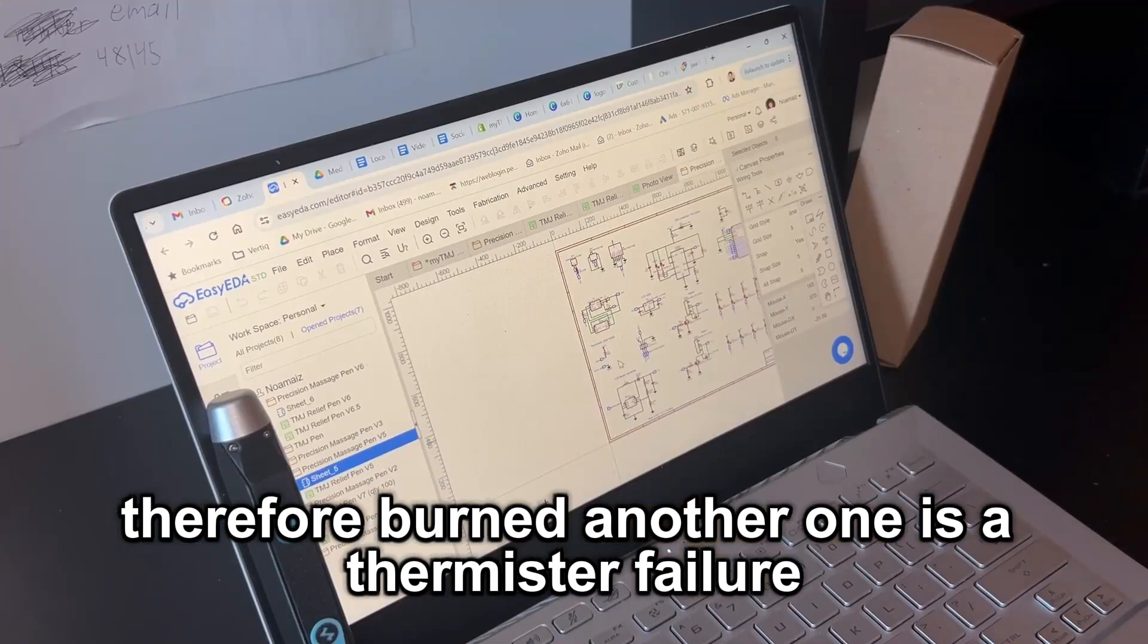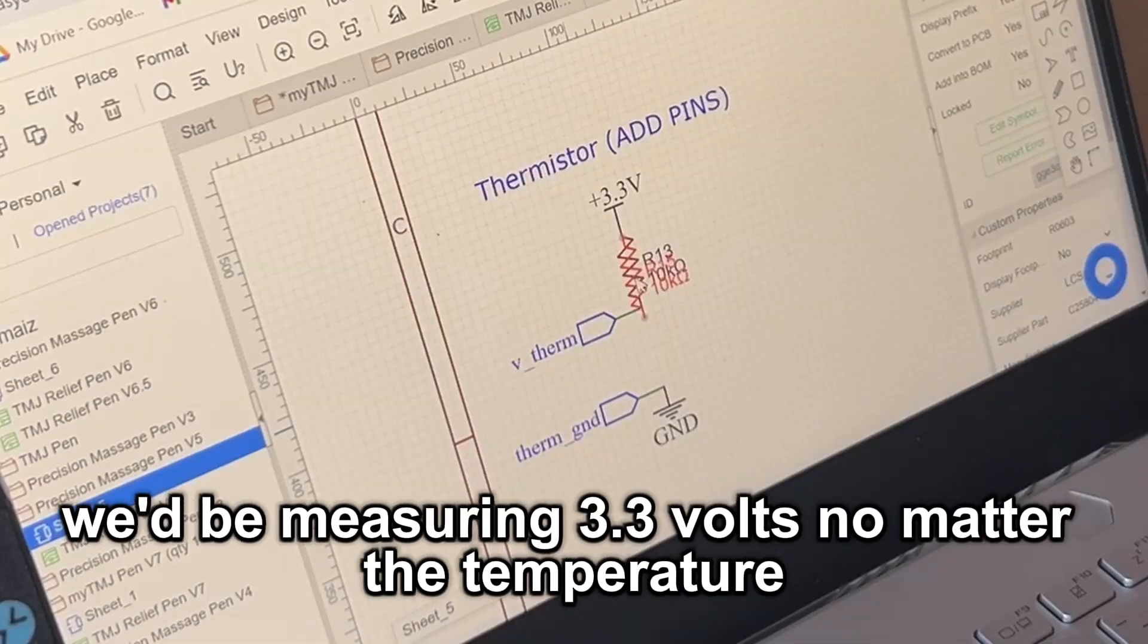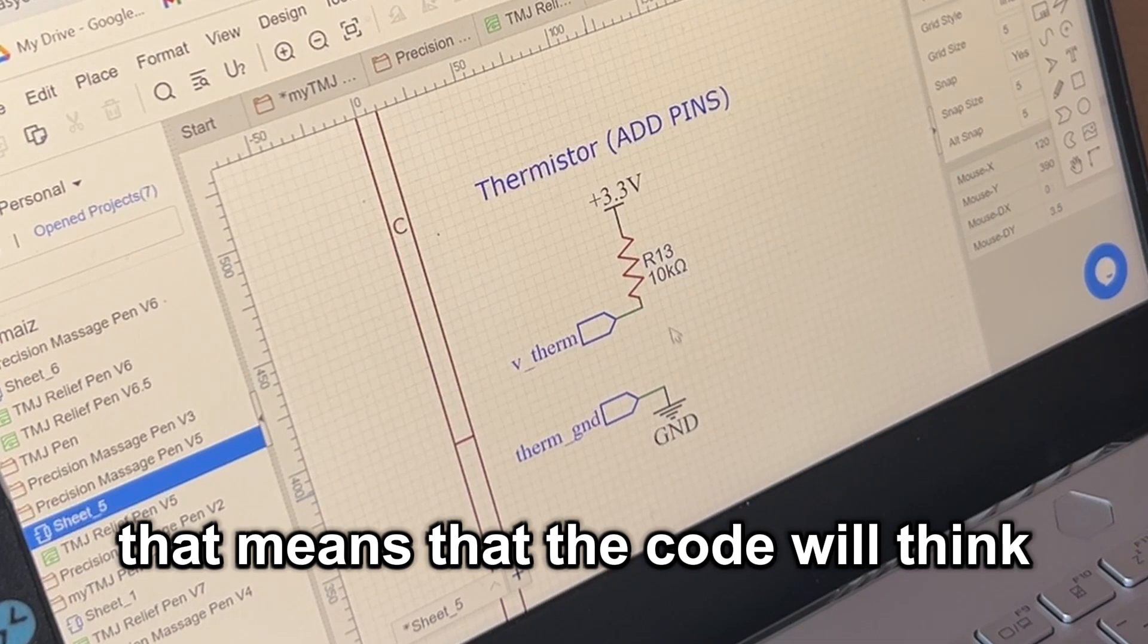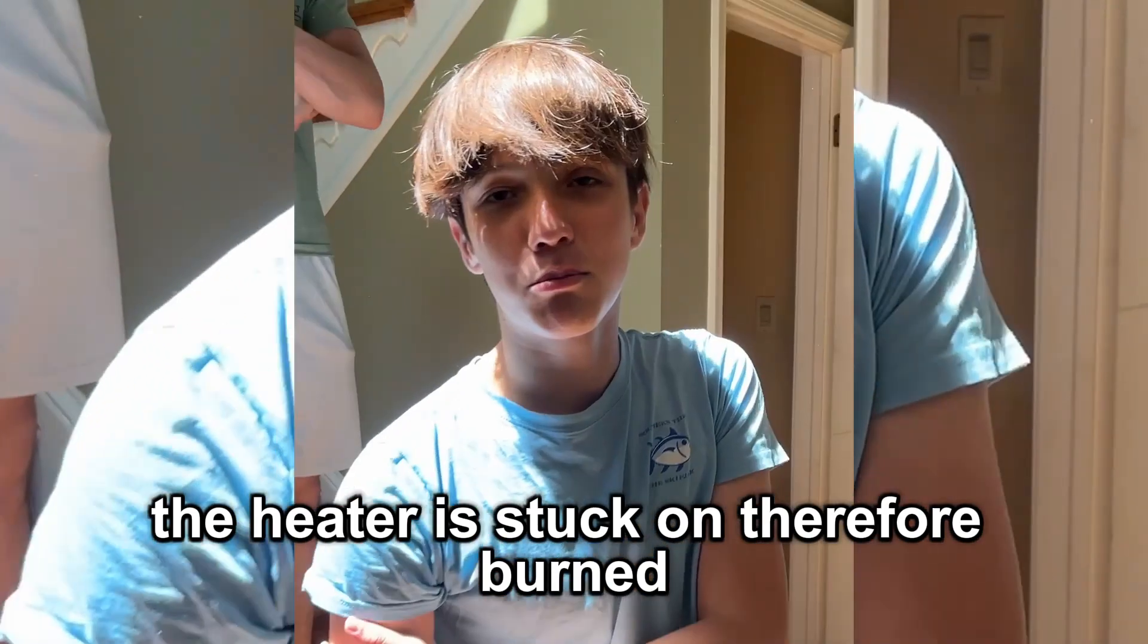Another one is a thermistor failure. If the thermistor breaks and makes an open circuit, we'd be measuring 3.3 volts no matter the temperature. That means that the code will think it's always too cold. Therefore, the heater is stuck on. Therefore, burned.